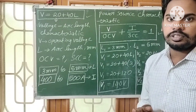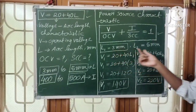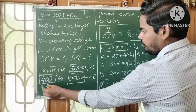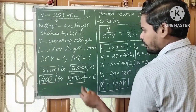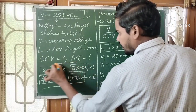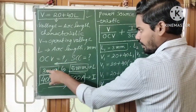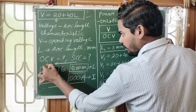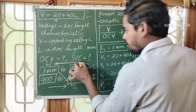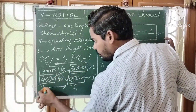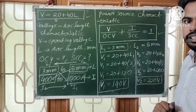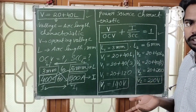Since current and arc length are inversely proportional, for arc length L1 = 3 mm (minimum), the corresponding current I1 = 500 amperes (maximum). For arc length L2 = 5 mm (maximum), the corresponding current I2 = 400 amperes (minimum).